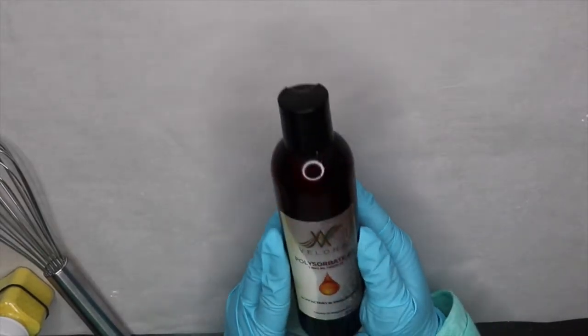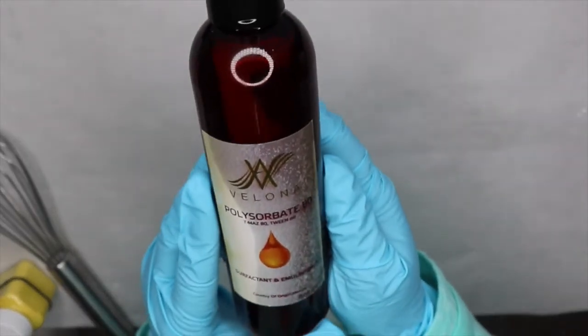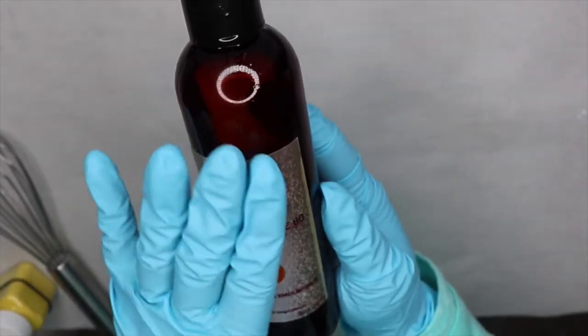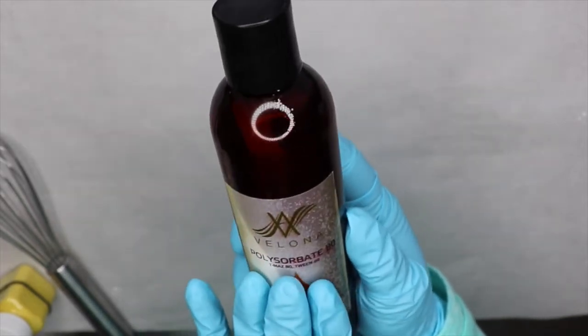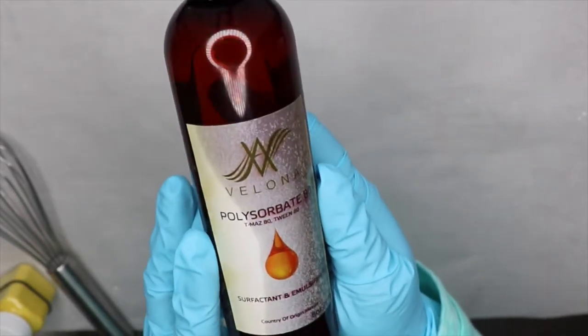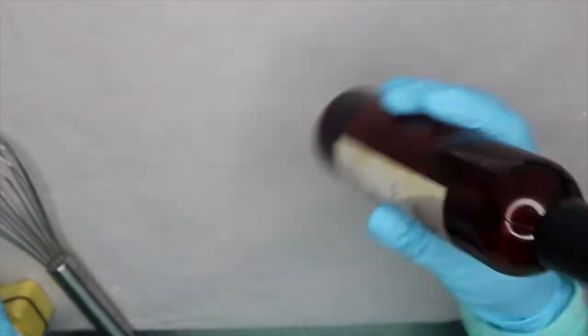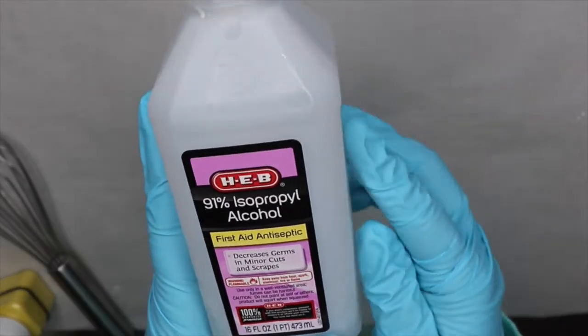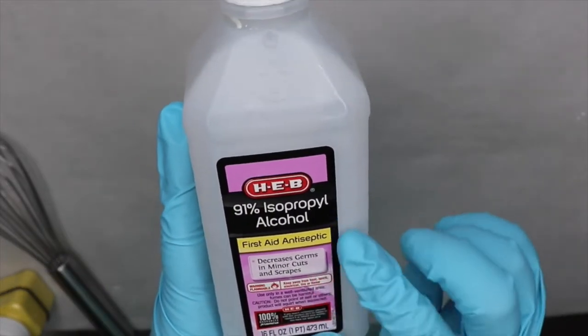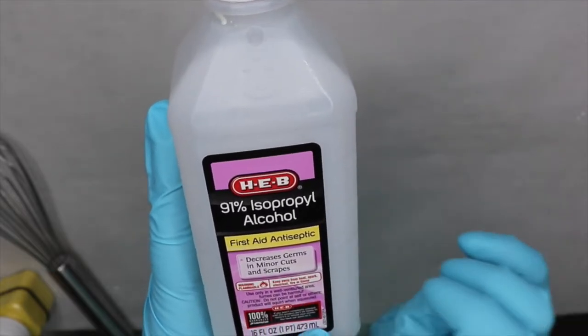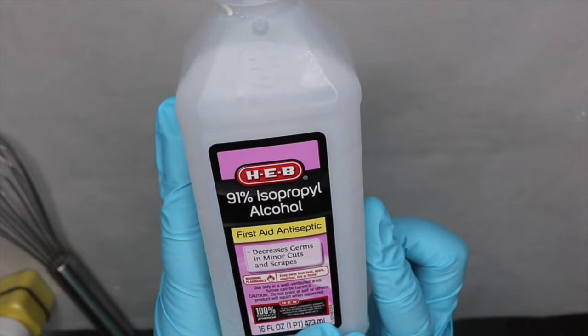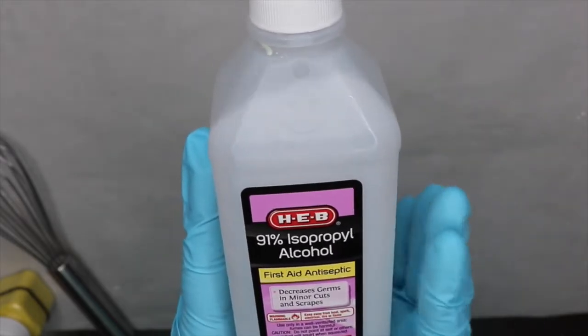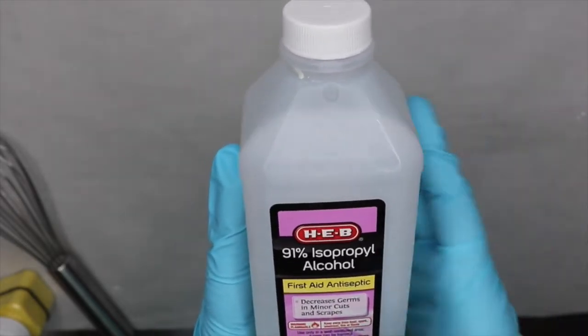To my mixture I will also be adding polysorbate 80. This will allow for everything to emulsify and drain nicely down the drain. I will also be adding 91% alcohol to add moisture to the batter that will eventually evaporate so it will make it for a hard product.